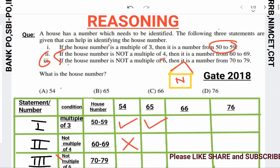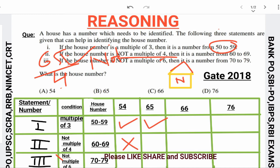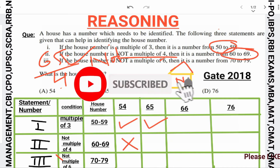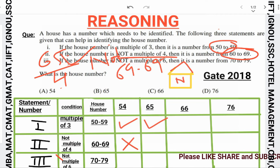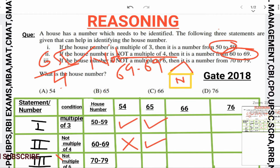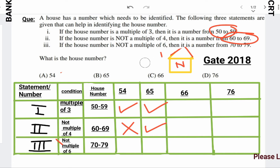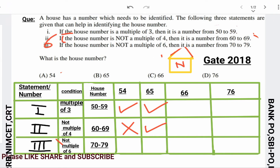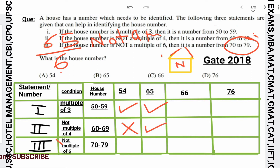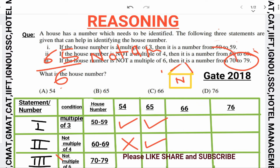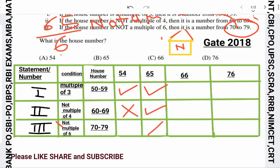Is 65 a multiple of 4? No, 65 is not a multiple of 4. So the second condition applies: the number should be between 60 and 69. And 65 does lie between 60 and 69, so this condition is satisfied. Now, is 65 a multiple of 6? No, it is not a multiple of 6. So the third condition applies: the number should be between 70 and 79. But 65 lies in 60 to 69, not 70 to 79.